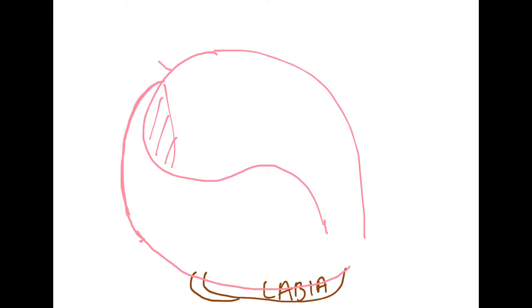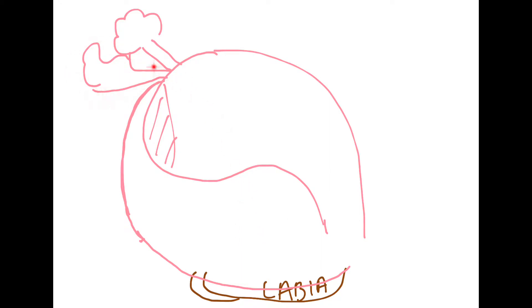This would be our ovary right here and our fallopian tubes coming out like this. So everything that covers the uterus is the mesometrium. Everything that covers the fallopian tube is the mesosalpinx and everything that covers the ovary is called the meso-ovarium. And we have a double layer of the broad ligament from the round ligament, which transverses through the labia majora.